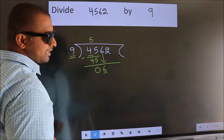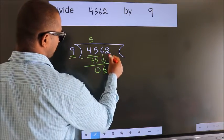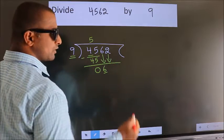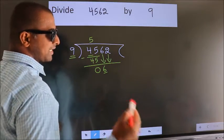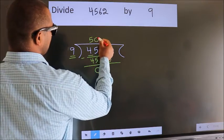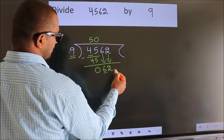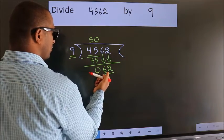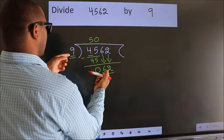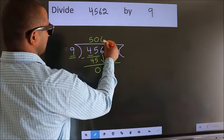So we should bring down the second number, and the rule to bring down the second number is to put 0 here. Then only we can bring down this number, so 62. A number close to 62 in the 9 table is 9 times 6, which is 54.